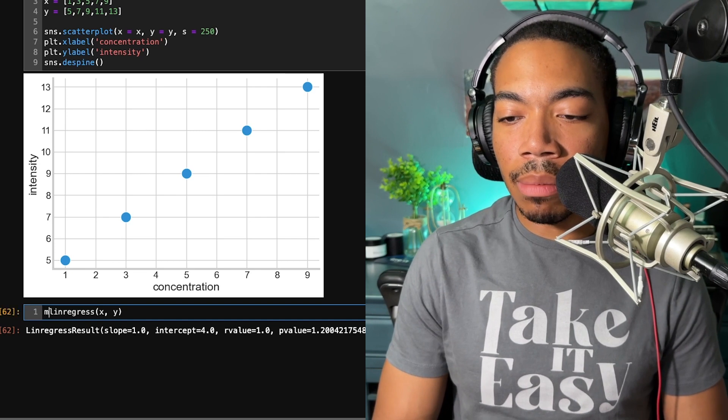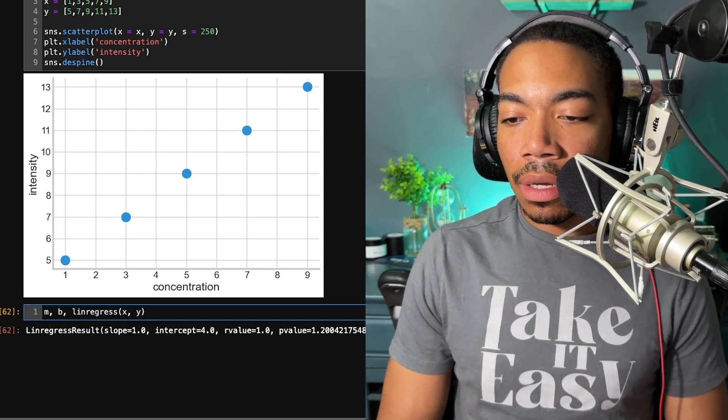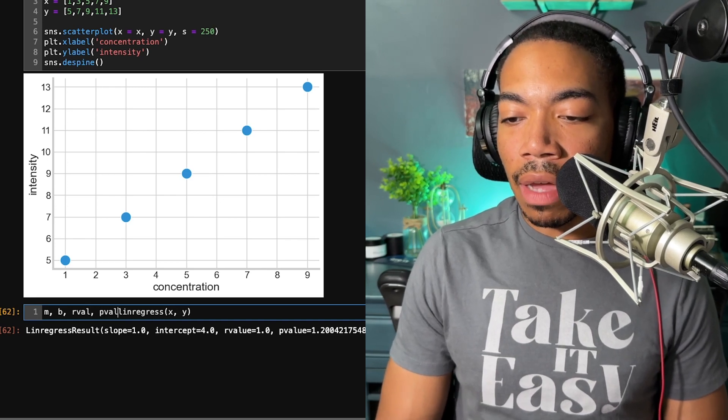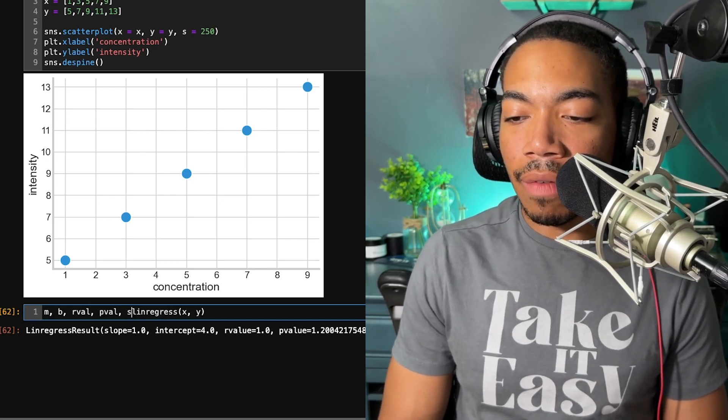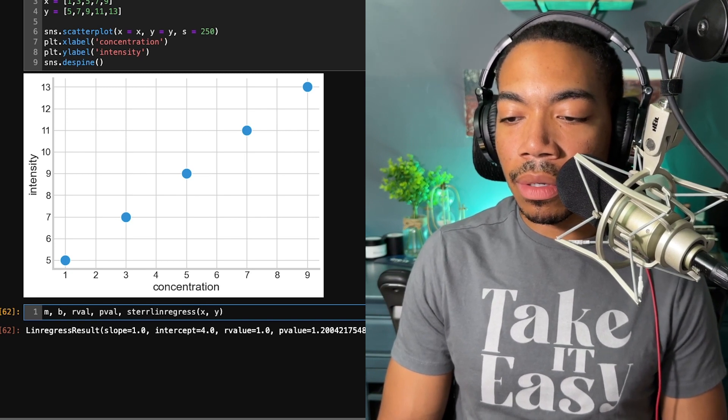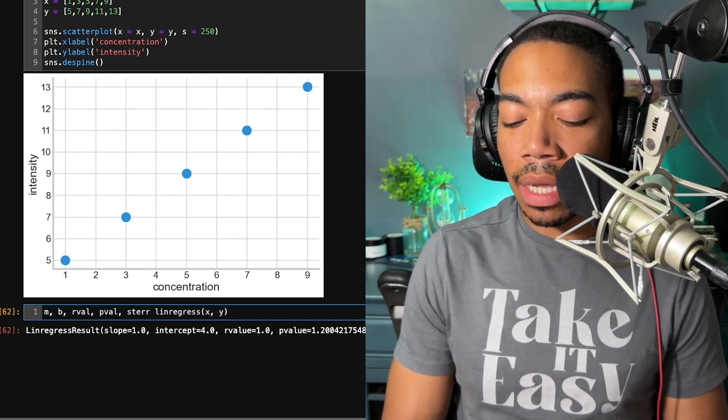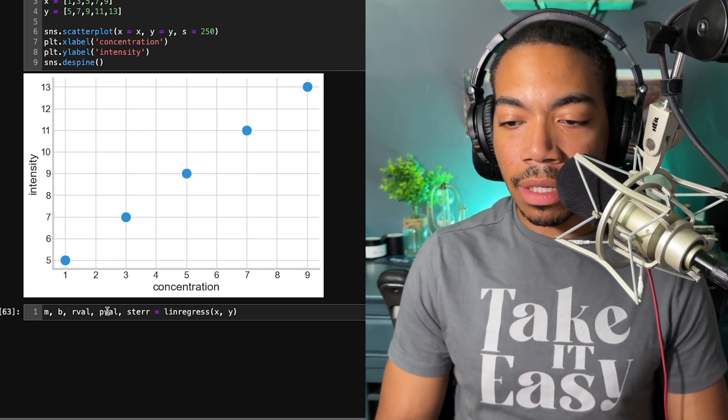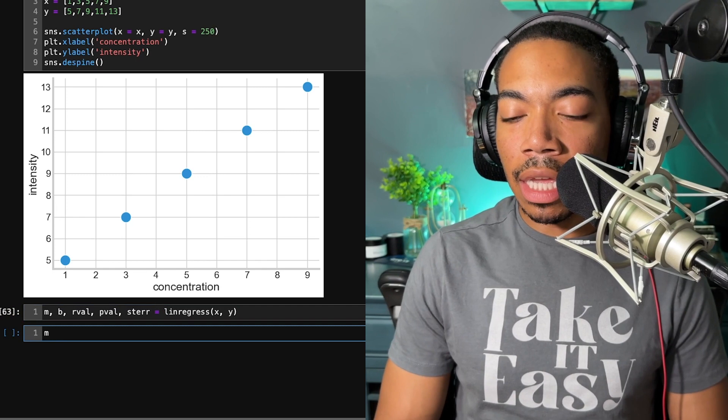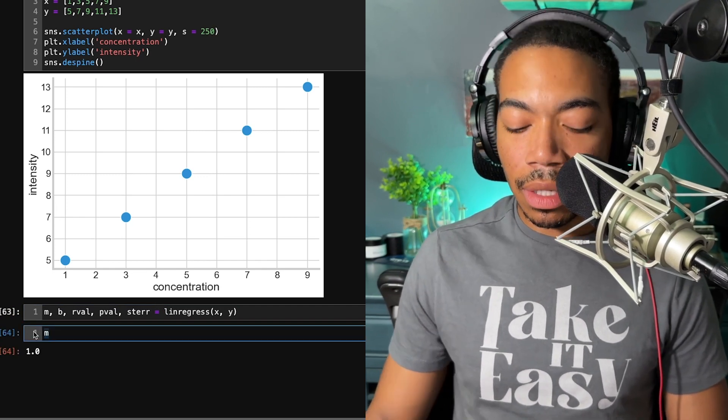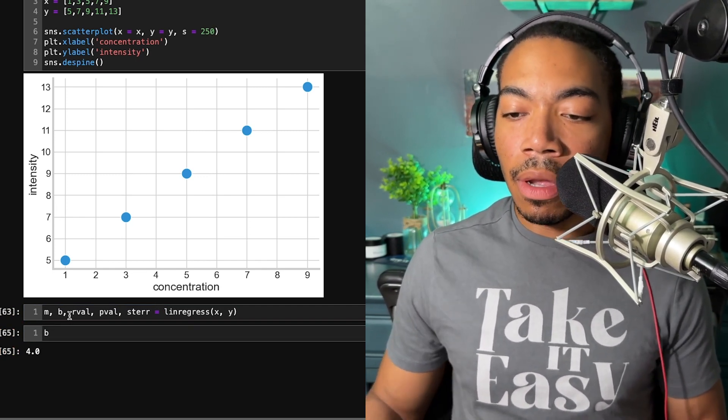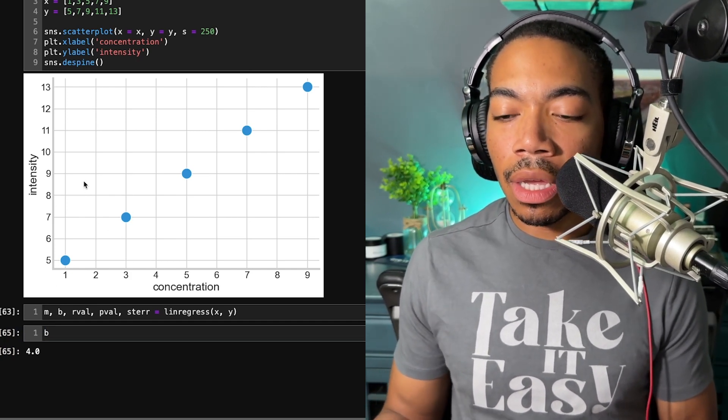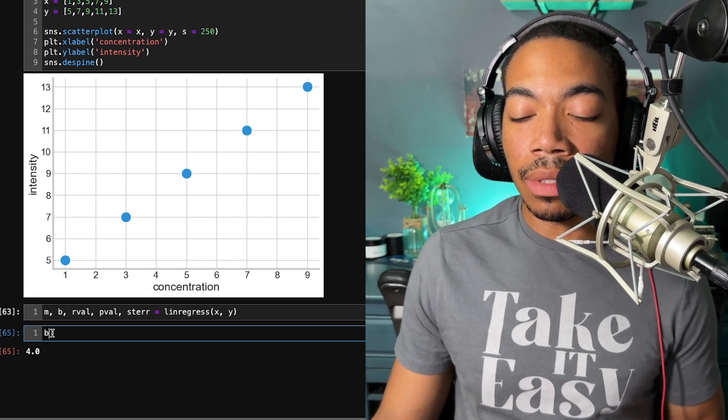So slope will be stored as m, the intercept will be stored as b, r value for the r value, p value for the p value, and then we'll have a standard error term that we will store as such. Now, all those parameters are stored in their respective values. If you look at m, you see that it's 1. If you look at b, you see that we have that 4 value. And so now we have our model parameters that we can then begin to use to estimate the concentration from another sample.